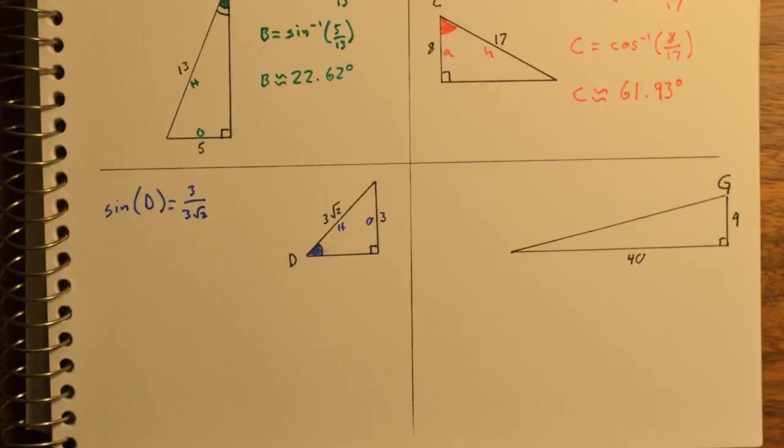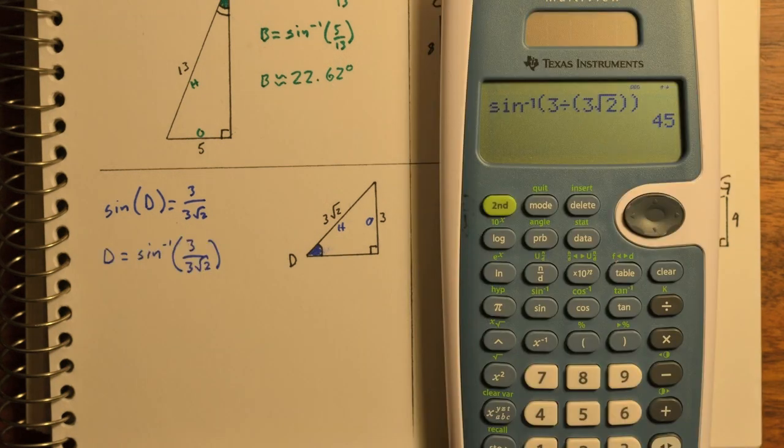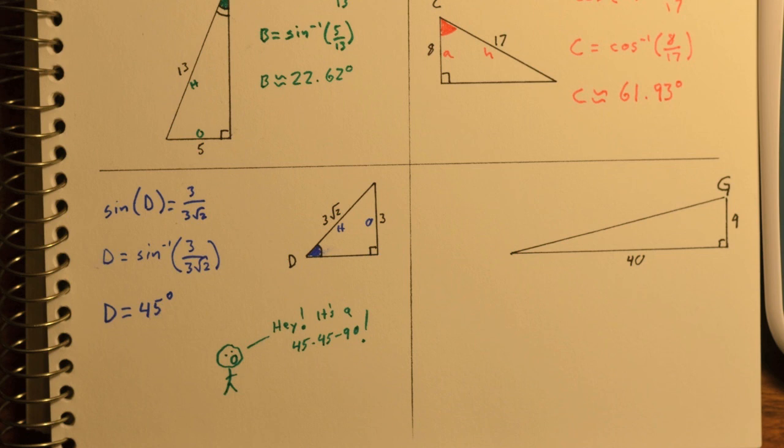This third example, we are given the opposite and hypotenuse for angle D. And so therefore, D is the inverse sine of 3 over 3 root 2, which is, hey, 45 degrees. That's a special right triangle.